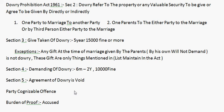Investigate karne ke liye, police officer kisi ko without warrant arrest kar sakta hai. Agar investigate karne ke baad pata lagta hai ki yeh sach mein dowry offense hai aur accused hai, to wo usse magistrate ke paas pesh karega aur further procedure chalega. Agar nahi lagta ki offender hai, to wo use chhod dega.